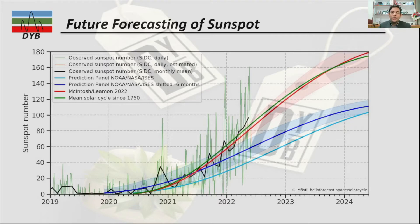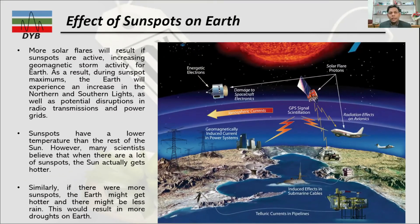We are studying sunspot activities because they affect certain equipment and life parameters we use in daily life. These are the effects of sunspots on the earth. When there are more solar flares, there is more sunspot activity, which means increased geomagnetic storm activity for the earth. This figure shows the sun and our earth, and what things will be affected by sunspot activities.